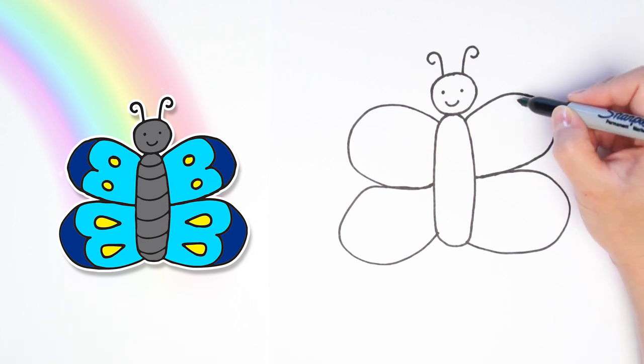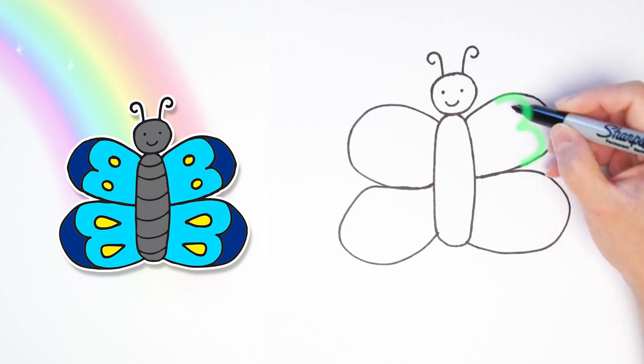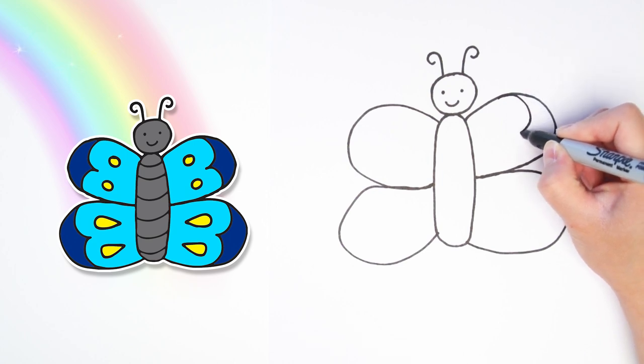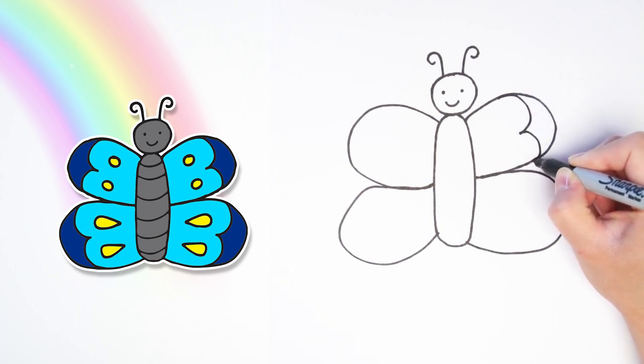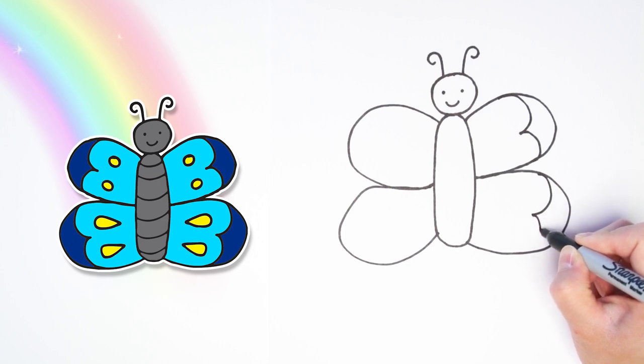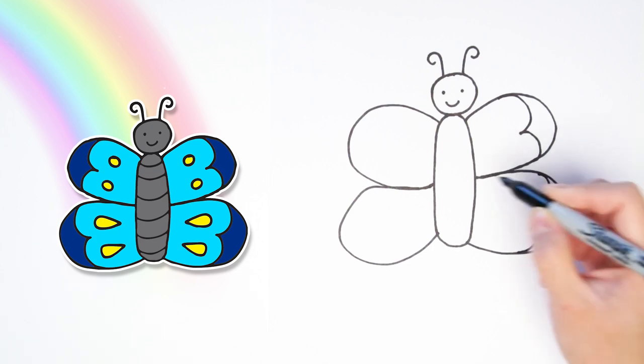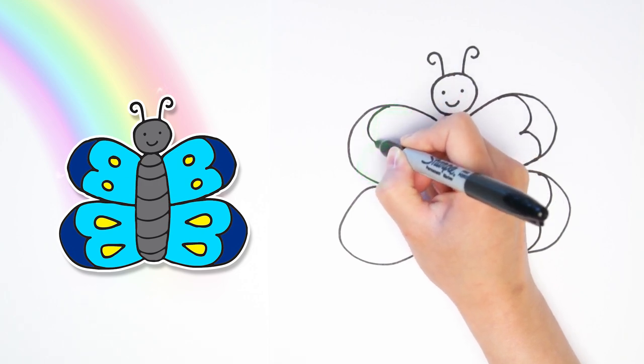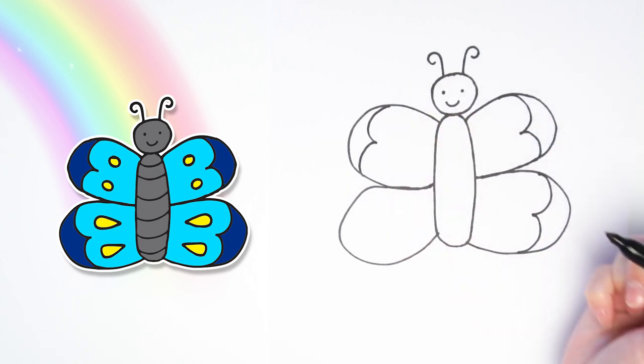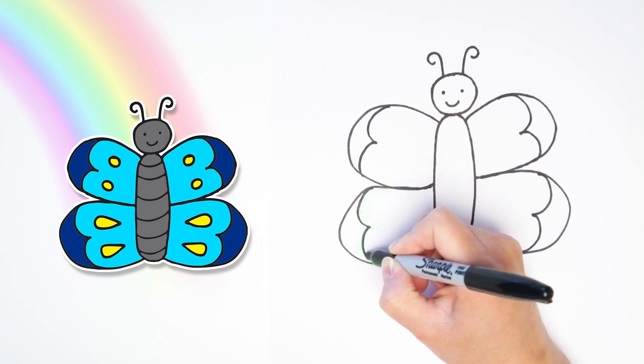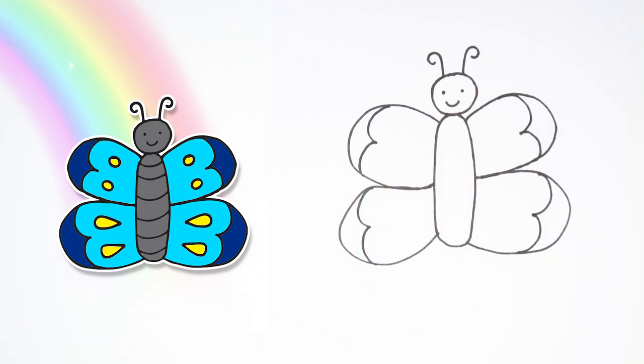Alright, now we're going to do some more three shapes. We're going to do a small one right here to decorate the inside of the wing. And let's do another one on the bottom, just on the inside, on the edge. And we're going to do it on the other side. A backwards number three. And then let's finish the last one with a backwards number three. These are cute little decorations for inside the wings.